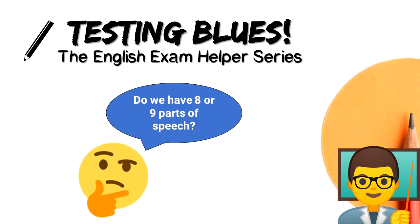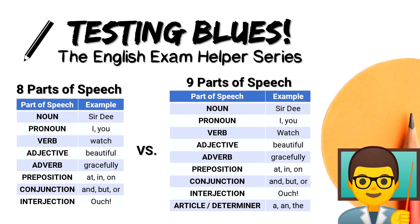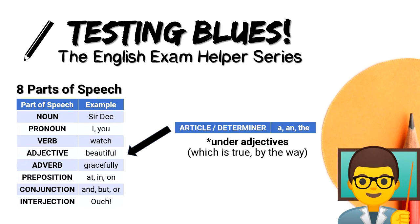Do we have eight parts of speech or nine? Some educators insist that there are eight parts of speech: noun, pronoun, verb, adjective, adverb, preposition, conjunction, and interjection. While some insist that there are nine: noun, pronoun, verb, adjective, adverb, preposition, conjunction, interjection, and article/determiner. Those who subscribe to the eight parts of speech doctrine see articles/determiners as a classification under adjectives.